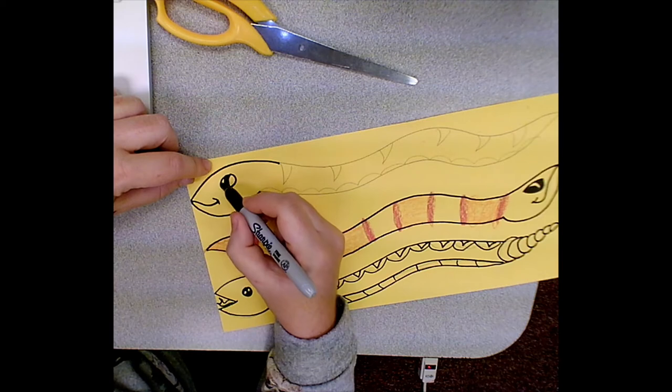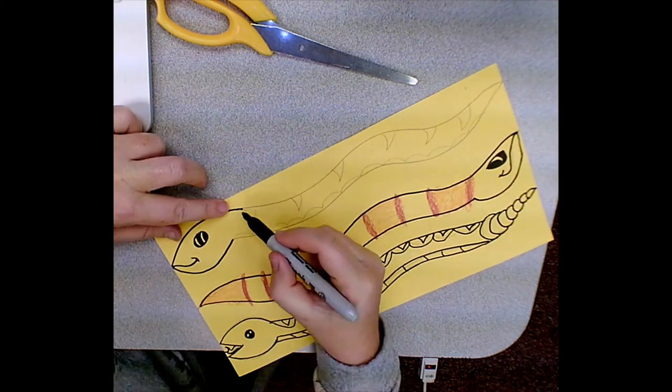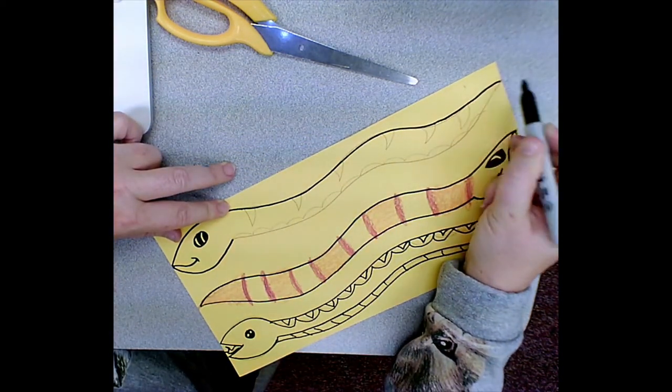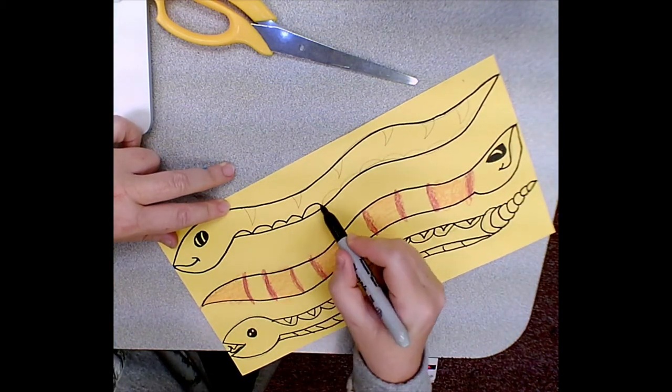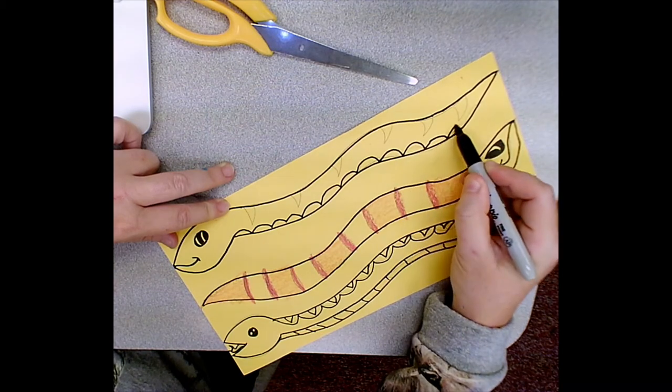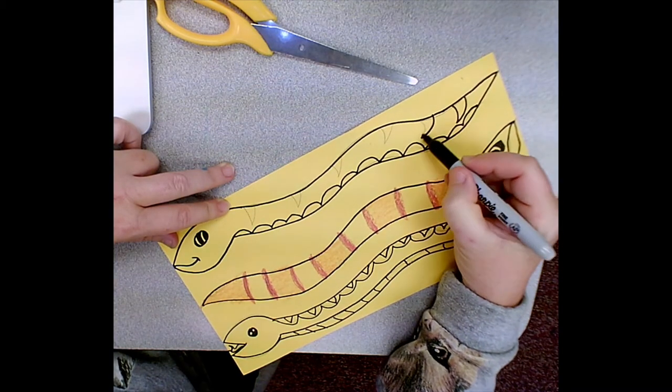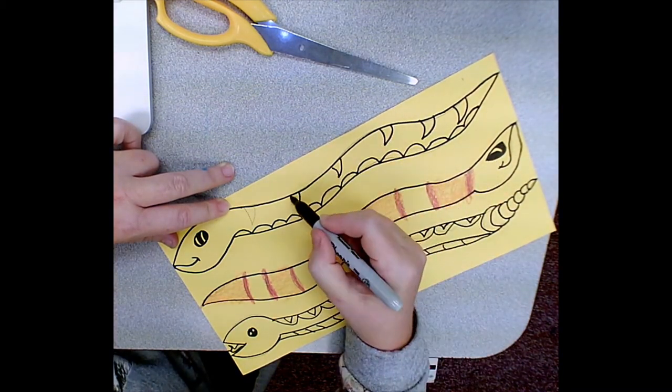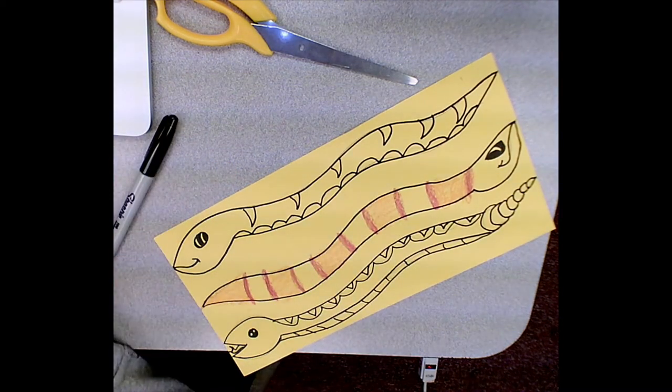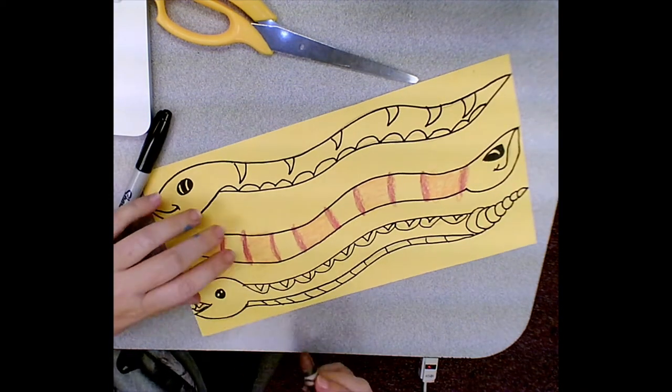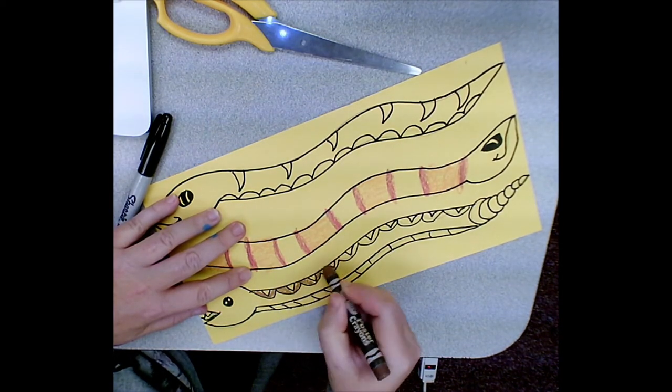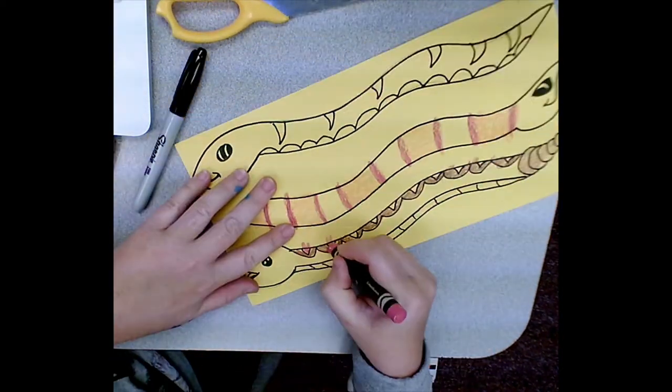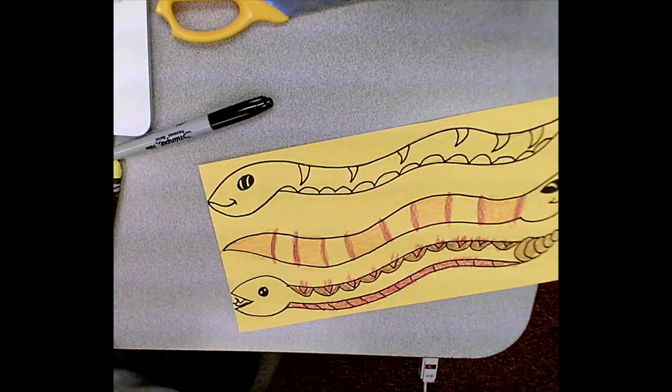Here we go, last step of the tracing process. Be careful because I am using a permanent marker. If you use a permanent marker, you might want to put a messy mat underneath. You can use the same messy mat that you used for painting. Now I'm going to speed this up so that you can see the whole coloring process before we move on to cutting these out.